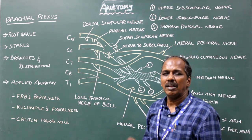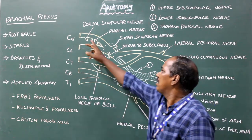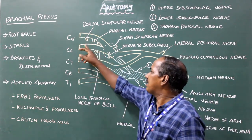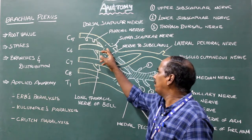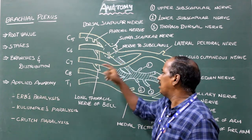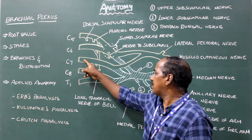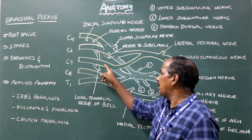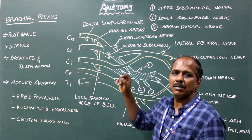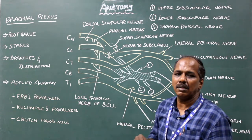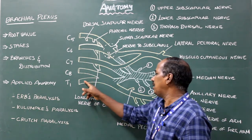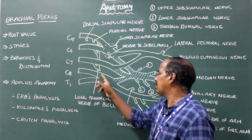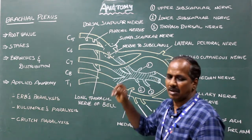Trunk stage. C5 and C6 join to form the upper trunk. C7 continues as the middle trunk. C8 and T1 join to form the lower trunk.